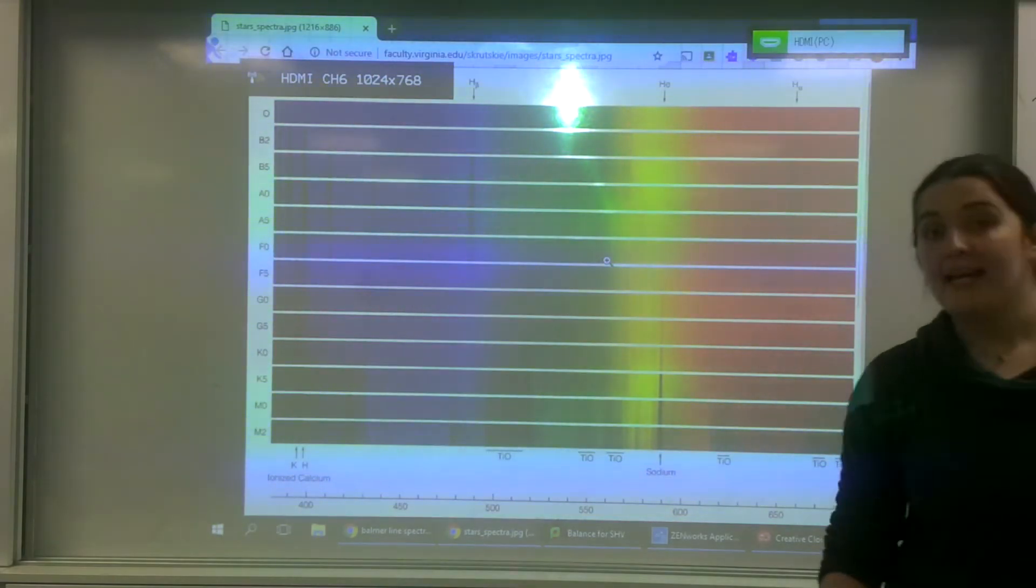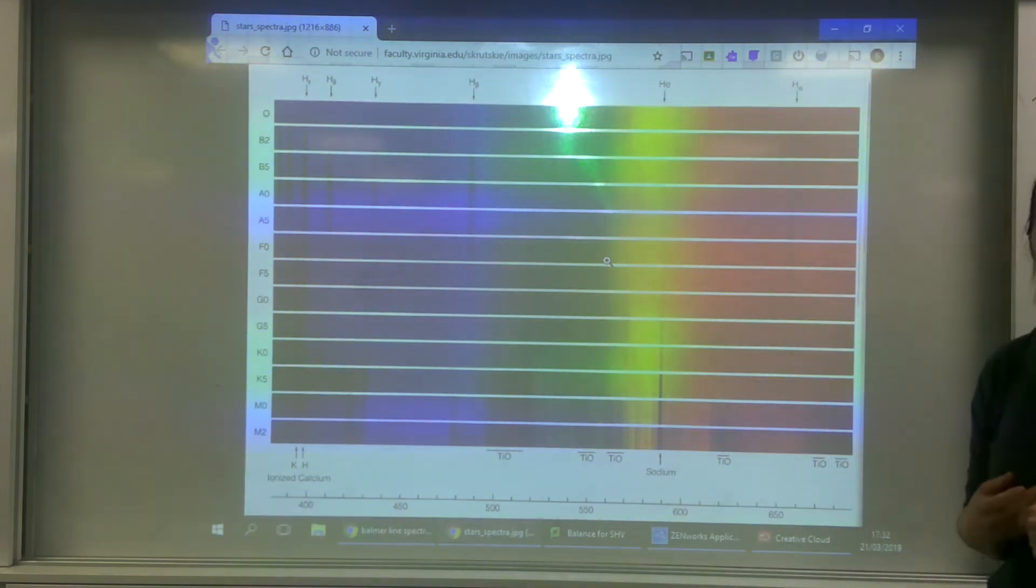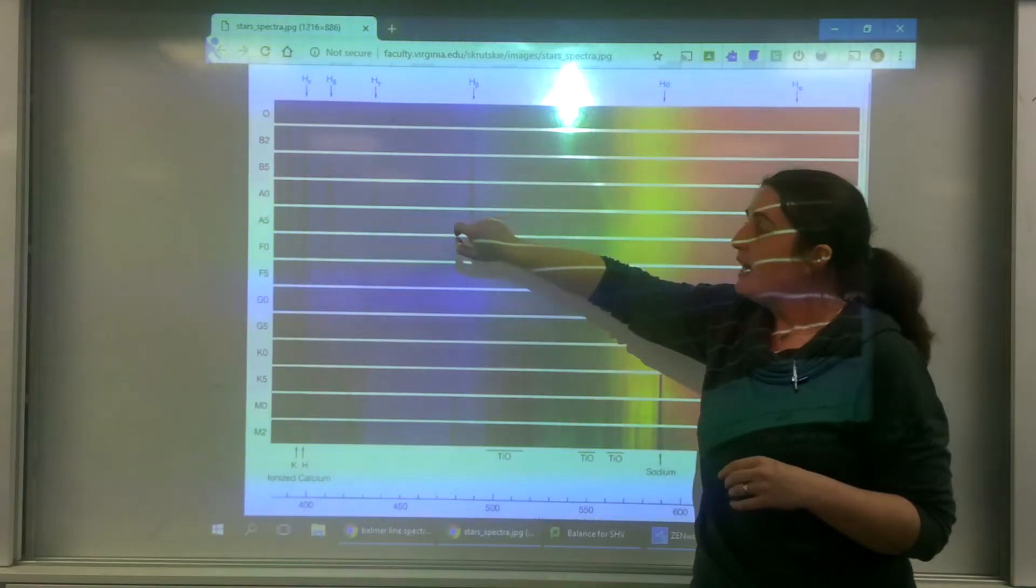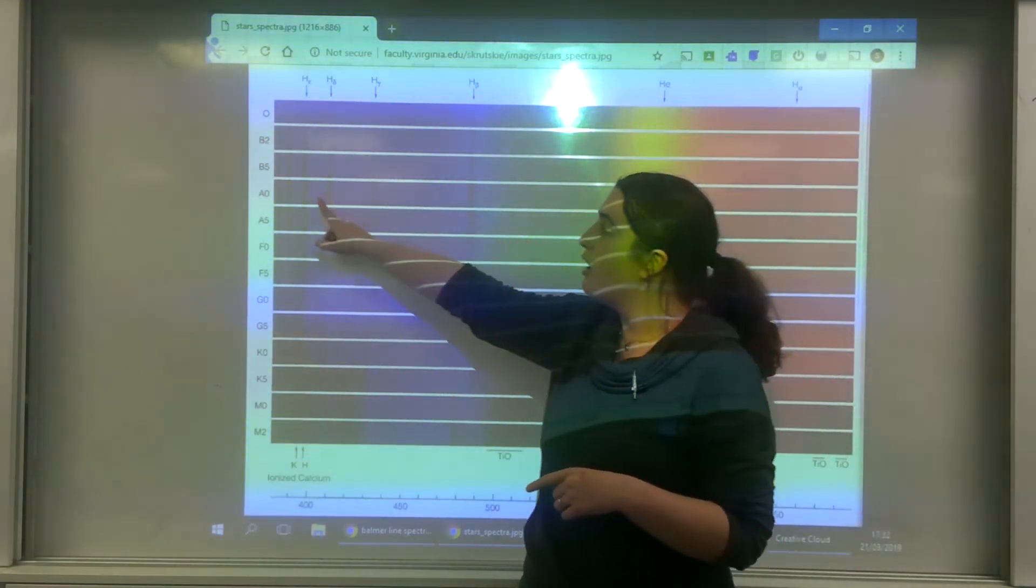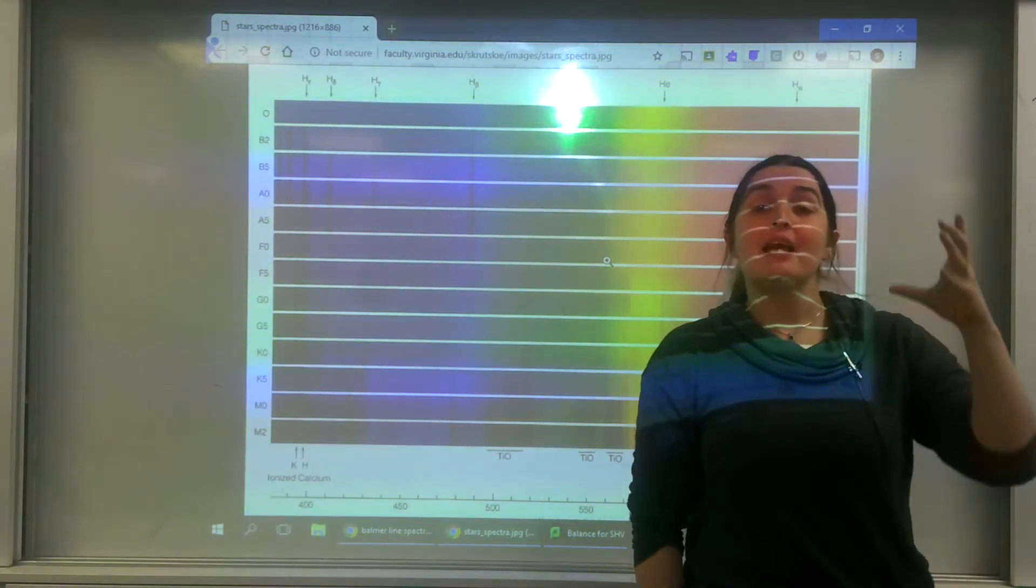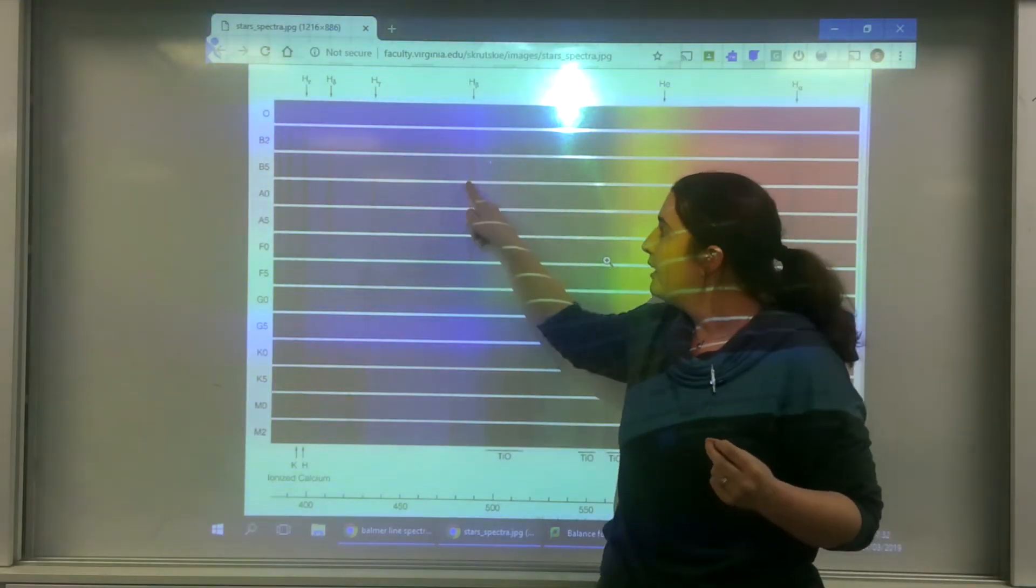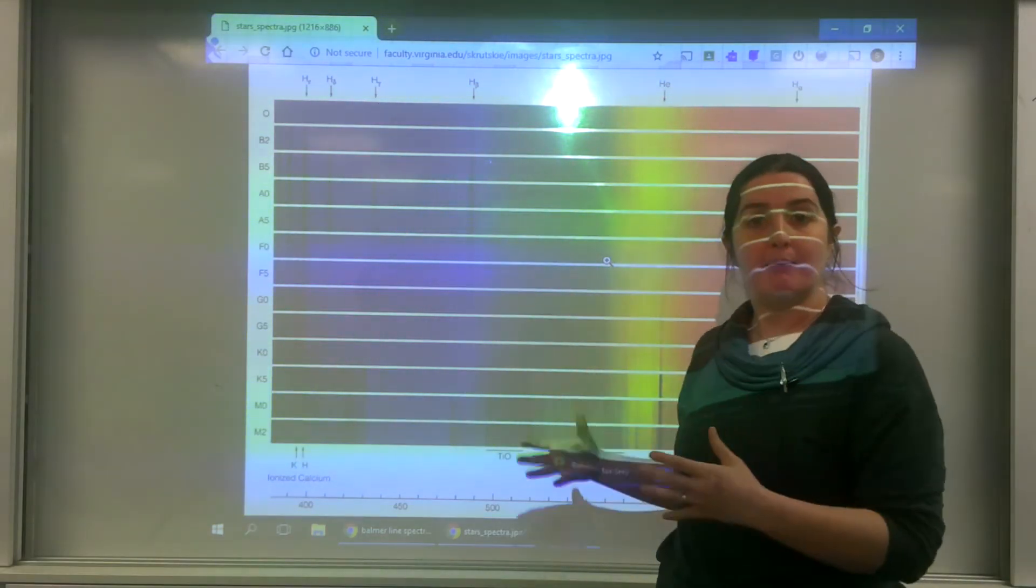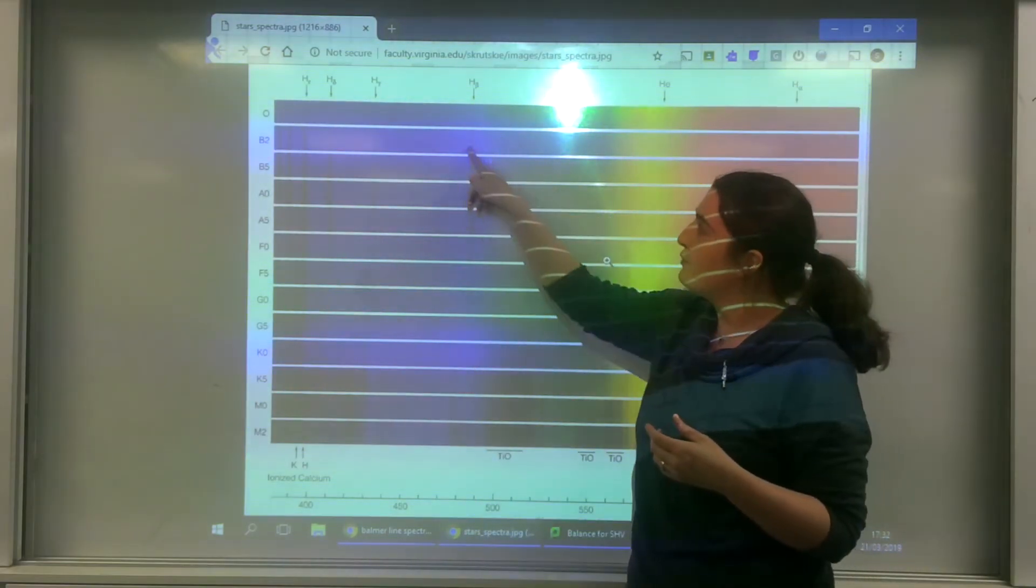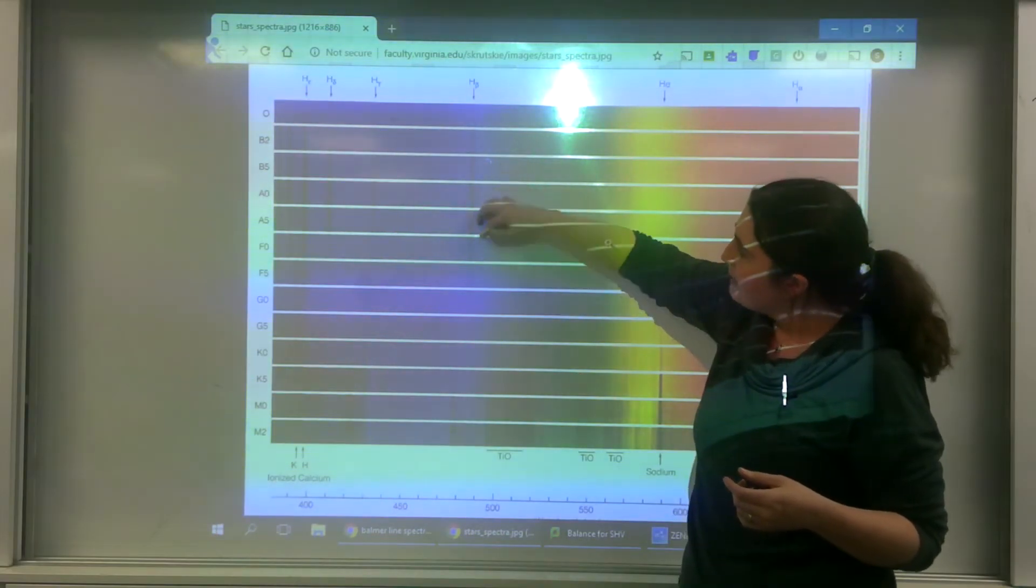This here is a spectra of different stars and what I'm going to focus on are these black lines. This is an A-class star, which initially was classified as having very strong Balmer Lines. As you can see here, there's a very dark region. This is A here, and then B.